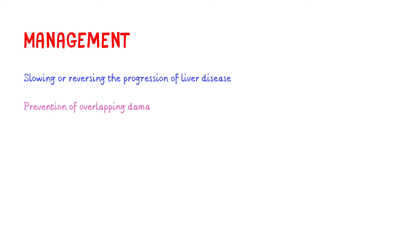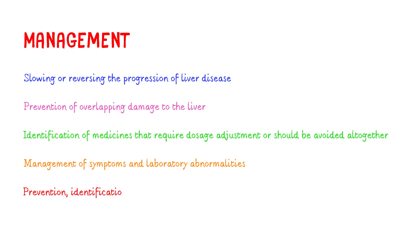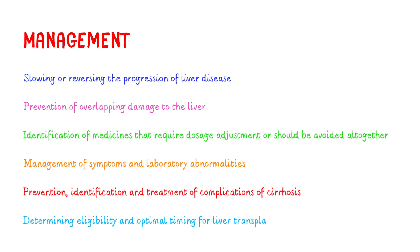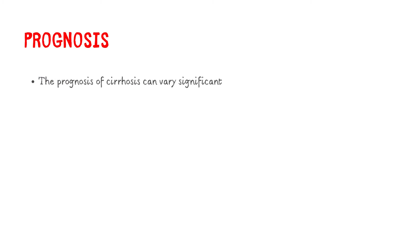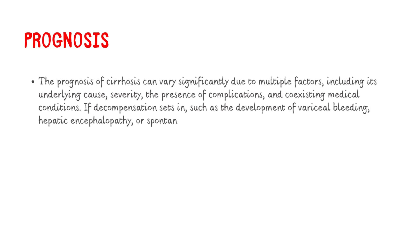The main objectives of managing patients with cirrhosis are: slowing or reversing the progression of liver disease, prevention of overlapping damage to the liver, identification of medicines that require dosage adjustment or should be avoided, management of symptoms and laboratory abnormalities, prevention and treatment of complications of cirrhosis, and determining eligibility and optimal timing for liver transplantation. The prognosis of cirrhosis varies significantly based on underlying cause, severity, presence of complications, and coexisting medical conditions. If decompensation sets in — such as variceal bleeding, hepatic encephalopathy, or spontaneous bacterial peritonitis — the likelihood of mortality increases.